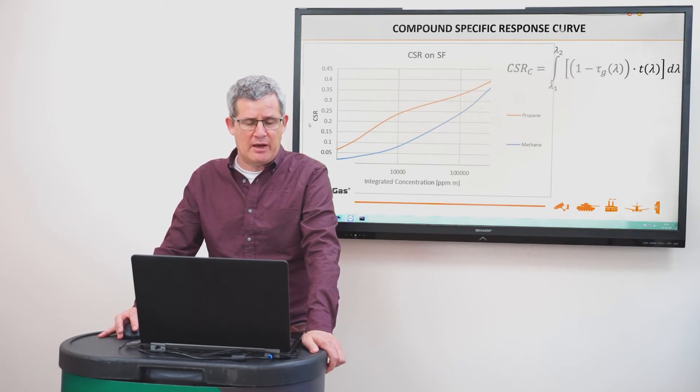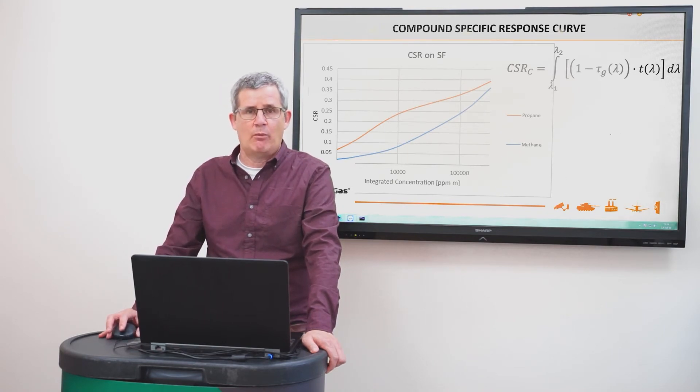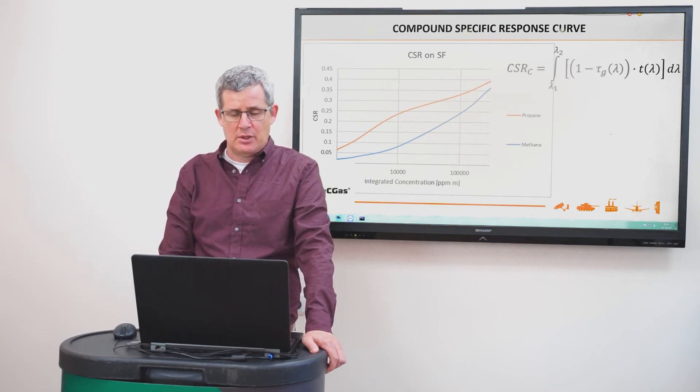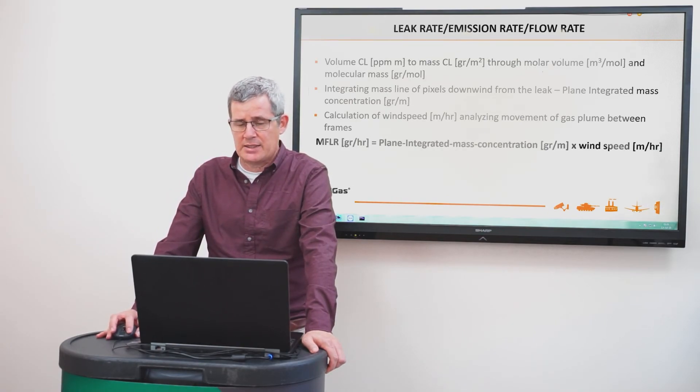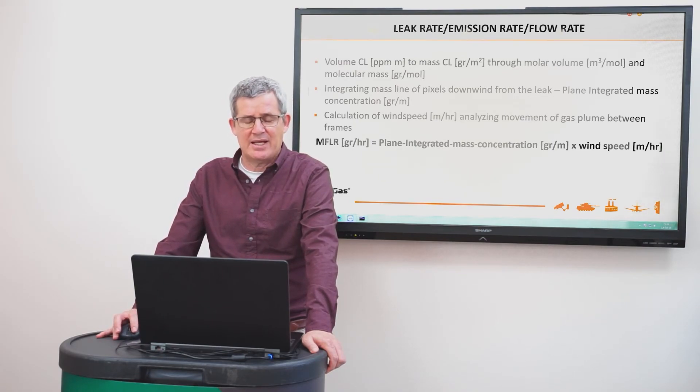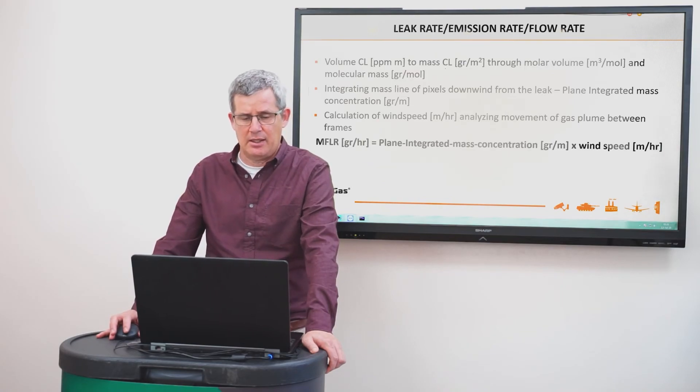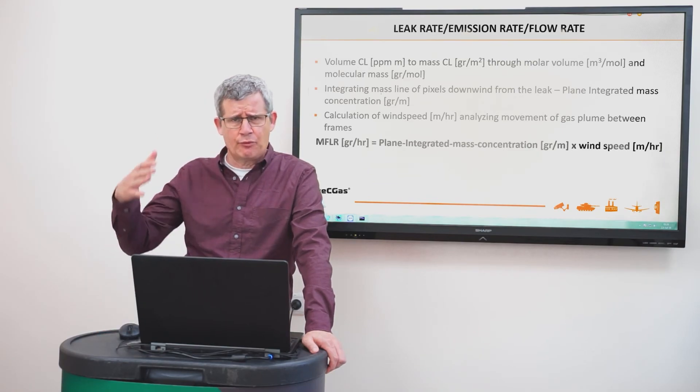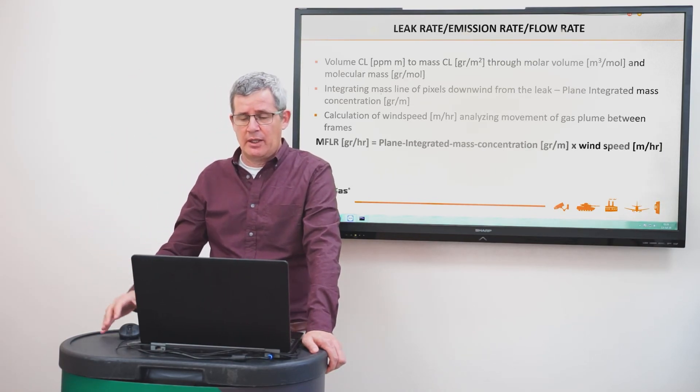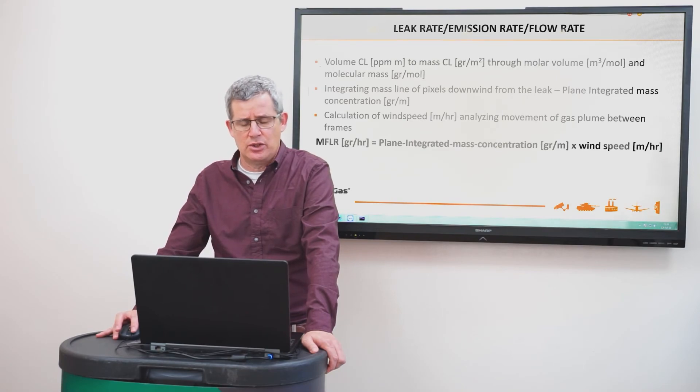Once we evaluate in every scene, the compound specific response from the camera, from the scene, we can have some way to convert this to ppm meters. So once we convert it to ppm meters, we can convert it to mass concentration through the gas density, which is taking into account the molar volume and the molecular mass of each gas. And once we have the mass concentration path lengths in gram per meter square, we can integrate this through a line of pixels downwind from the leak. And then we have the plane integrated mass concentration. And this is in units of gram per meter.